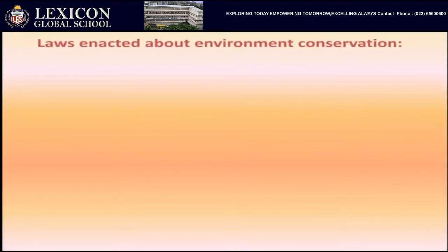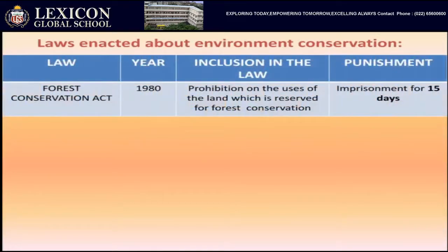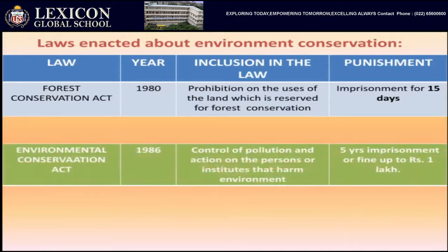There are certain laws enacted by the government for environmental conservation. The Forest Conservation Act was passed in 1980. It includes prohibition on the use of land reserved for forest conservation — people had started destroying forests to build huge buildings and shopping malls.